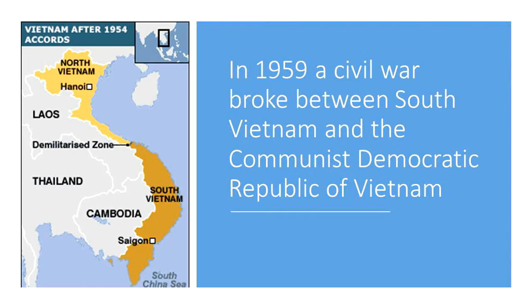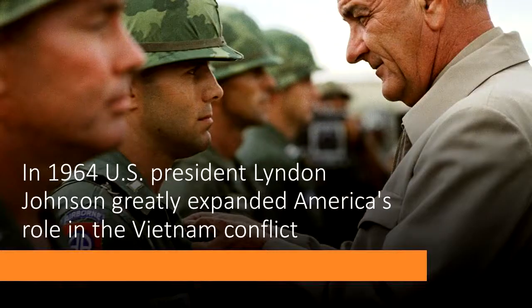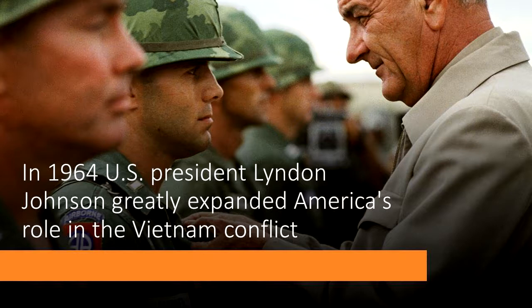In 1959, a civil war broke out between South Vietnam and the Communist Democratic Republic of Vietnam. Cold War fears and U.S. commitment to the ideology of containment drove the United States to get involved in Vietnam. Both President Eisenhower and Kennedy escalated the conflict while refusing to sign the Geneva Accords that temporarily divided the country. In 1964, U.S. President Lyndon Johnson greatly expanded America's role in the Vietnam conflict, seeking to escalate the war sufficiently to break the North Vietnamese will but not strongly enough to risk war with the entire communist bloc. South Vietnam received massive U.S. military aid, and the U.S. also extensively bombarded the North.